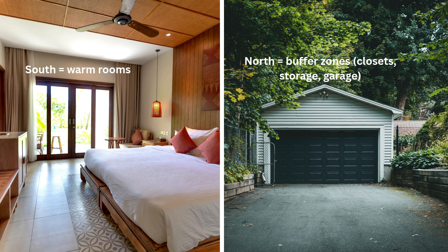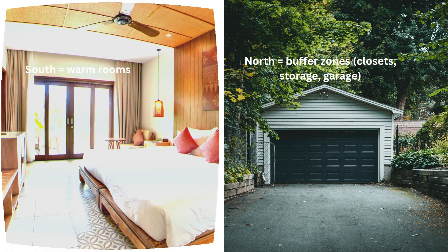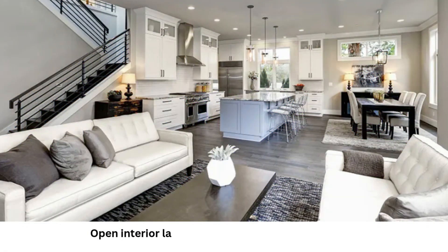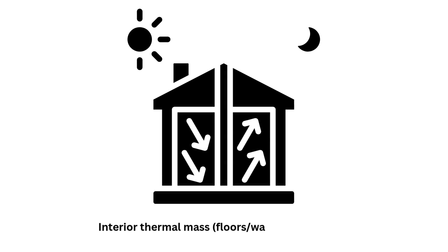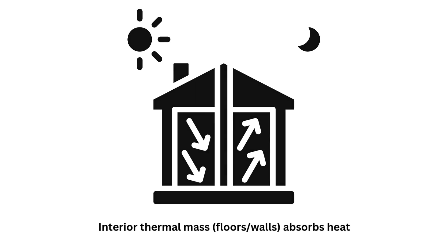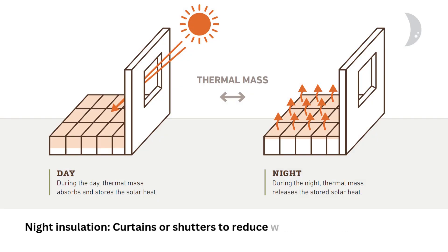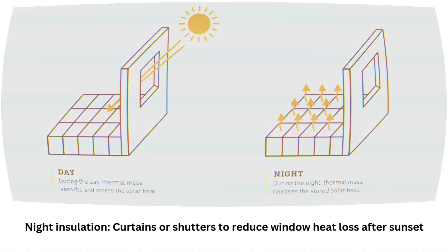Heat retention and distribution: the goal is to retain captured heat and spread it evenly. Use thermal zoning — south equals warm rooms, north equals buffer zones like closets, storage, and garage. Open interior layouts allow heat to move naturally. Interior thermal mass in floors or walls absorbs heat. Use night insulation — curtains or shutters — to reduce window heat loss after sunset.